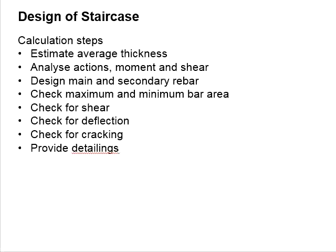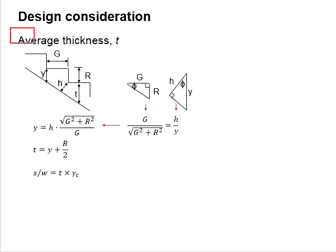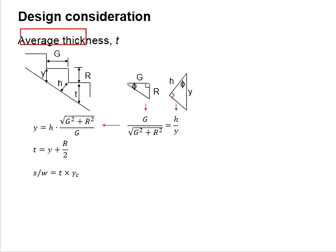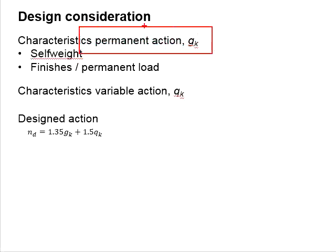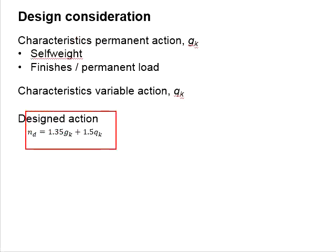Let us look into the calculation steps for the design of the staircase. First, you will need to estimate the average thickness of the staircase, which involves conversions to Y and then to T, where T equals Y plus R divided by 2, and R represents the riser. With the average thickness, you multiply the unit weight of concrete to determine the self-weight, then add finishes and permanent load to get the permanent actions. From Eurocode 1, you determine the variable actions, then multiply factors of safety 1.35 and 1.5 to get the design load.